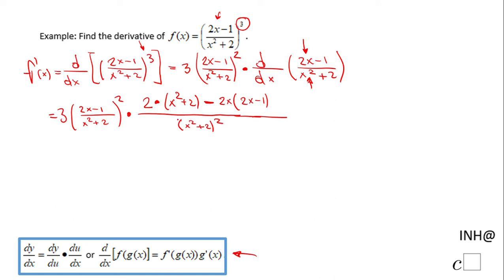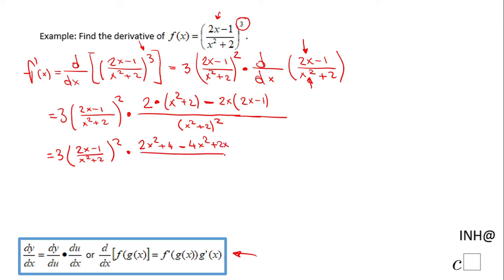From here it's only simplification — the calculus is done. We have 3 times the quantity (2x minus 1) over (x squared plus 2) to the second power, times, applying the distributive property: 2x squared plus 4 minus 4x squared plus 2x, over (x squared plus 2) squared.